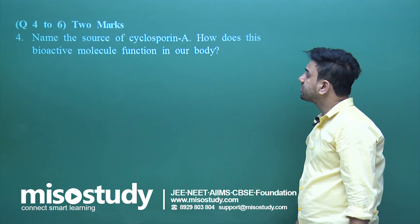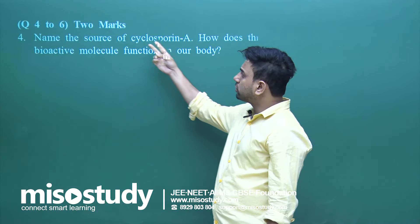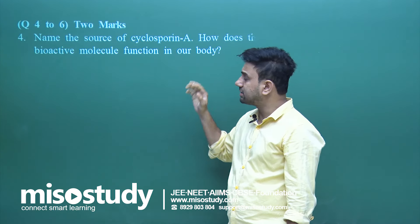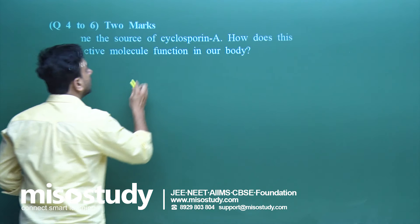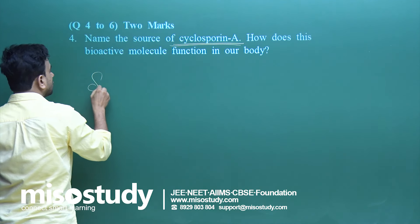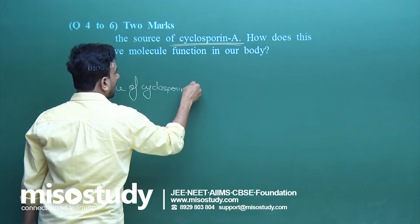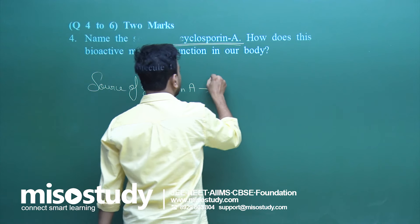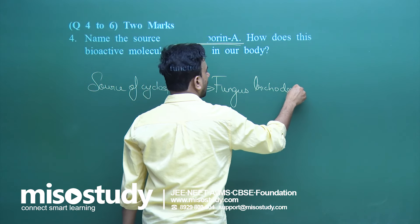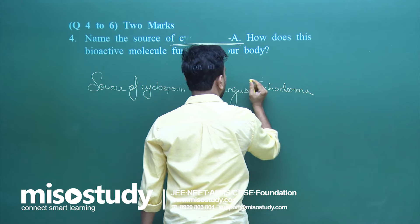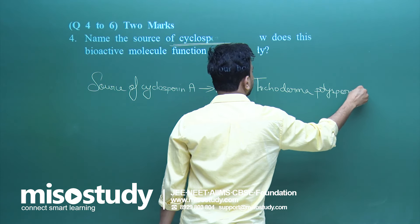The next question: name the source of cyclosporin A and how does this bioactive molecule function in the body? This is a two-mark question. The source of cyclosporin A is the fungus Trichoderma polysporum. That gets you one mark.